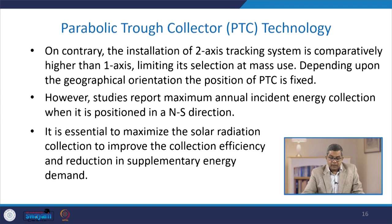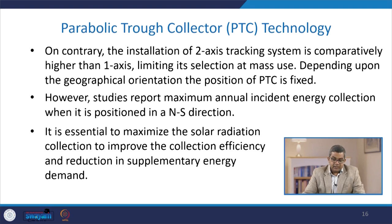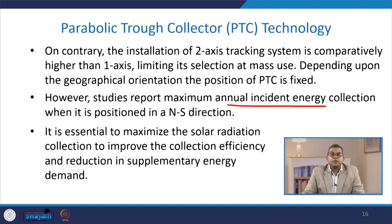The installation cost of a two-axis tracking system is comparatively higher than one-axis, limiting its selection for mass use. Depending upon the geographical orientation, the position of the PTC can be fixed. However, studies report the maximum annual incident energy collection when it is positioned in the north to south direction. It is essential to maximize solar radiation collection to improve collection efficiency and reduce supplementary energy demand.